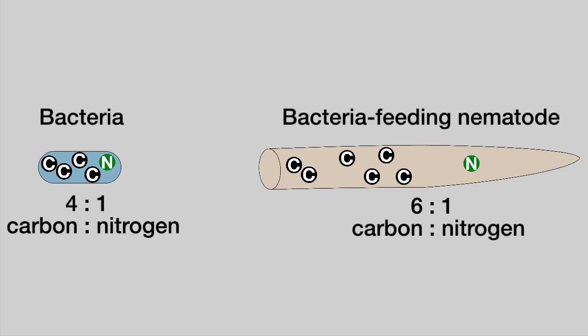This means that as the bacterial feeding nematodes consume their bacterial prey, they ingest more nitrogen per unit of carbon than they need.